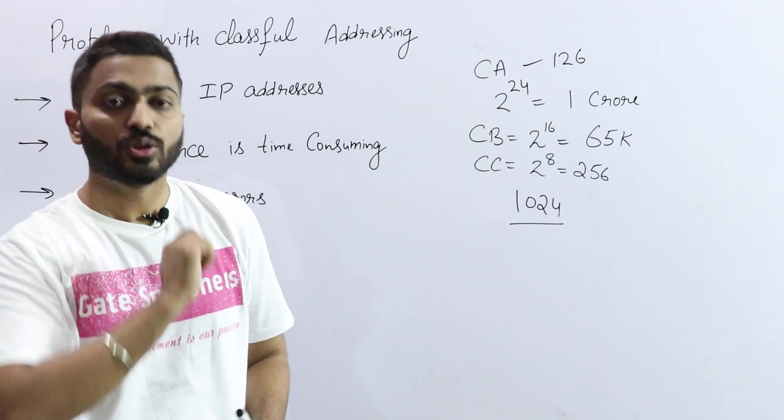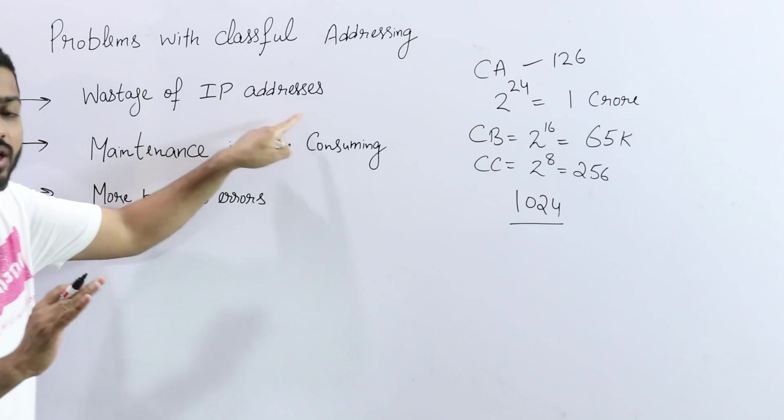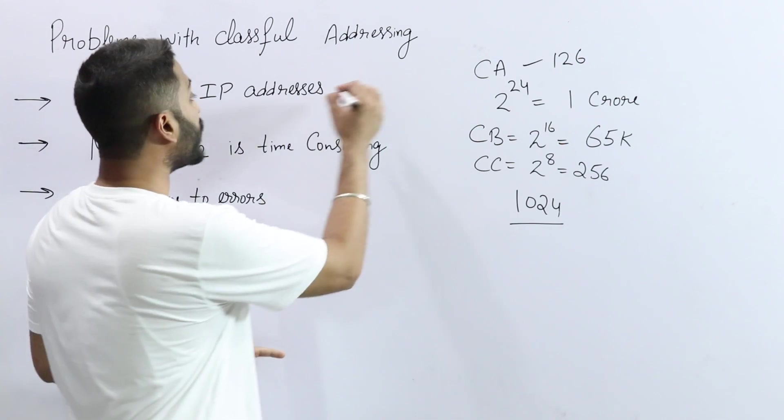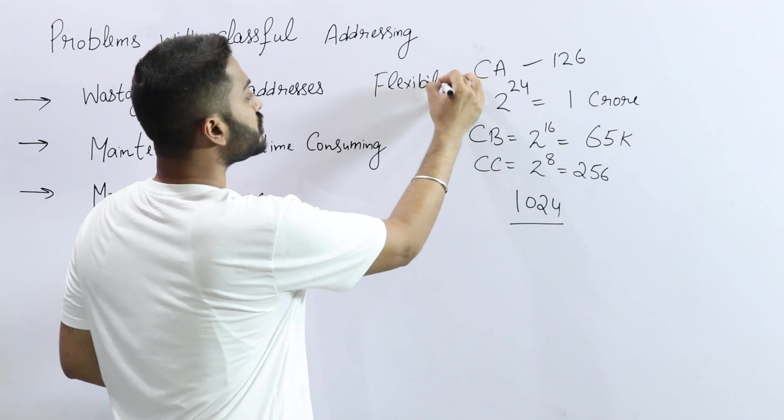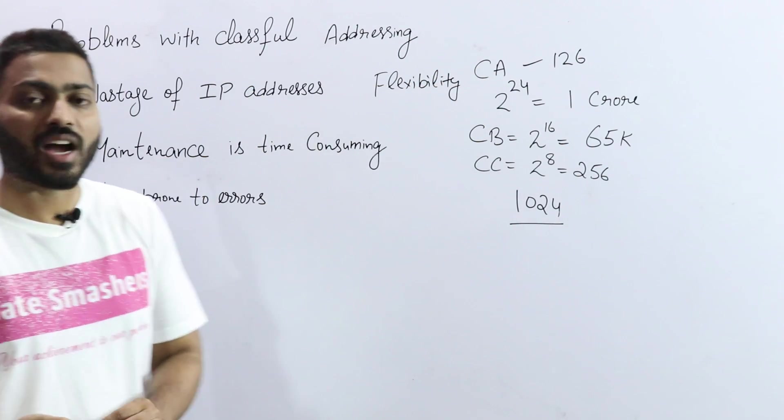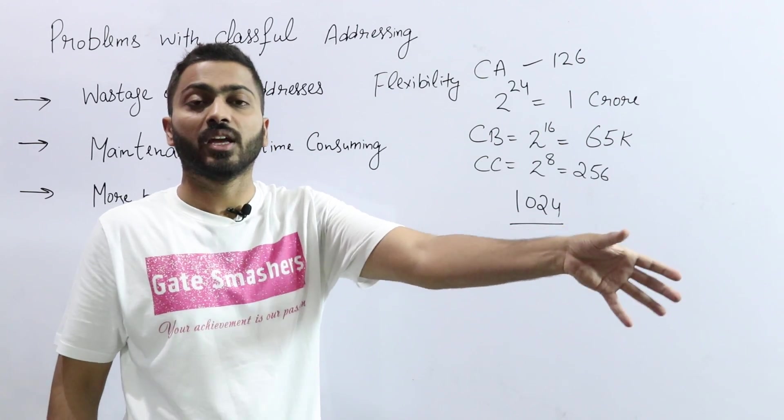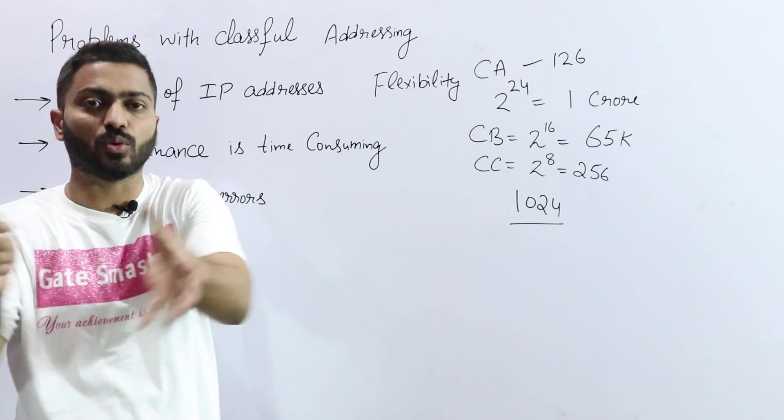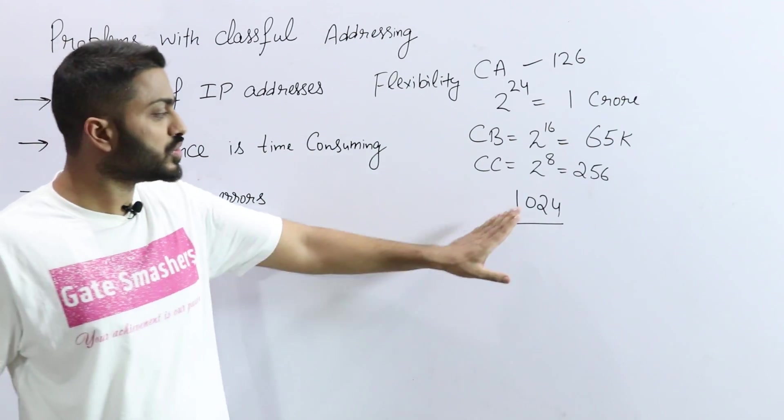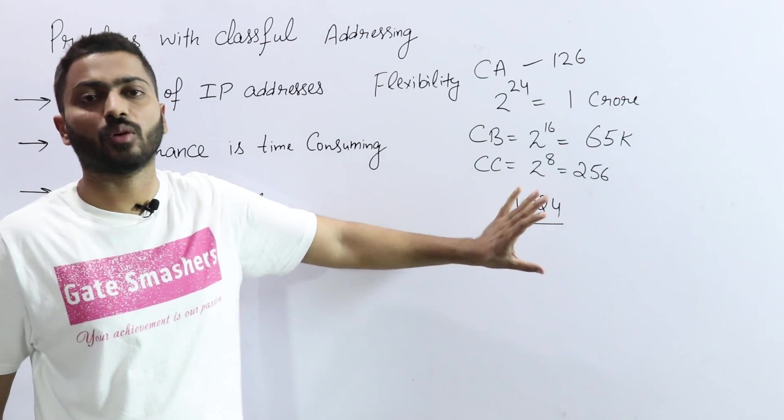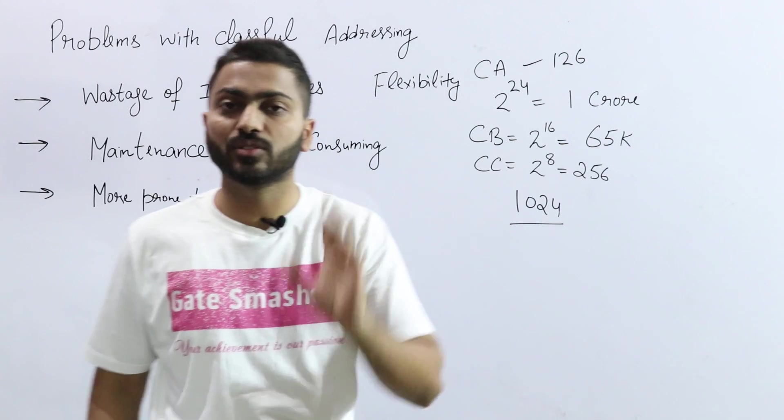Along with that, there is a problem with flexibility. Meaning, we're not providing IP addresses according to the user's demand. We have already manually allocated classes with fixed addresses. When a user comes with their requirement, we fulfill their demand from these fixed classes, but this causes wastage of many IP addresses.